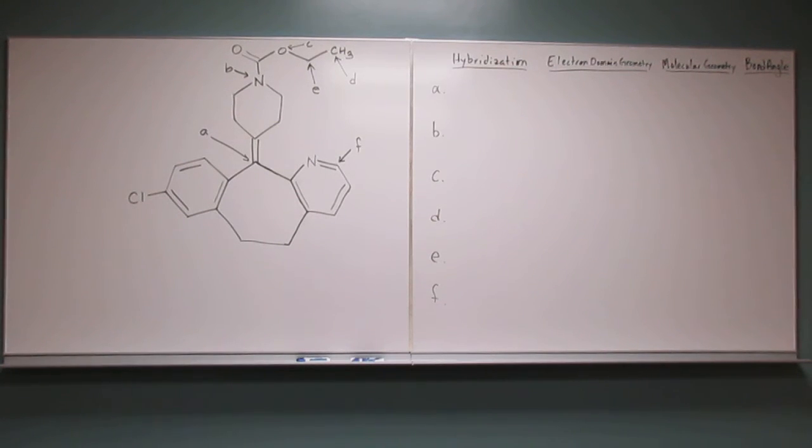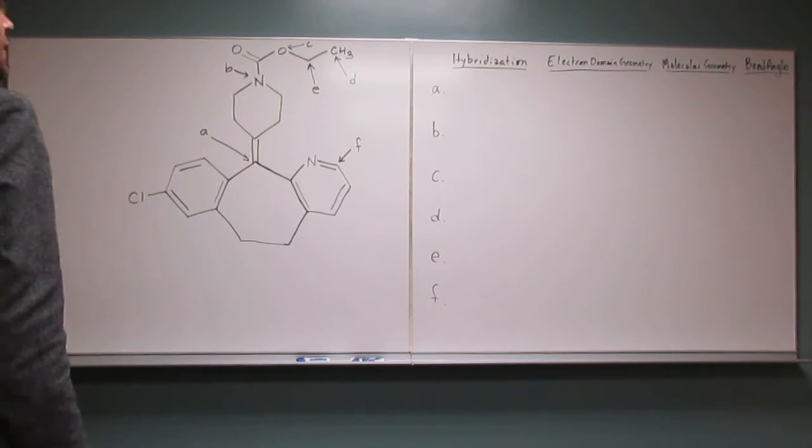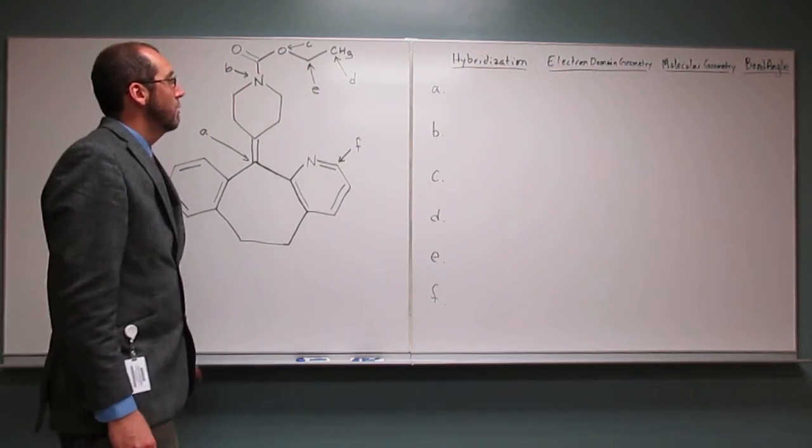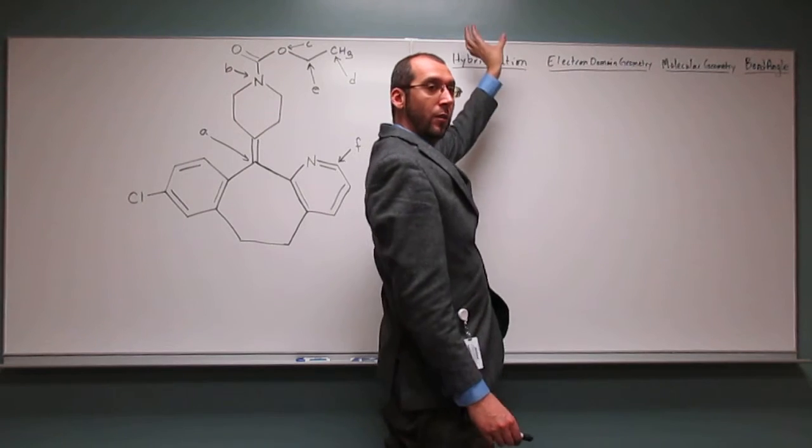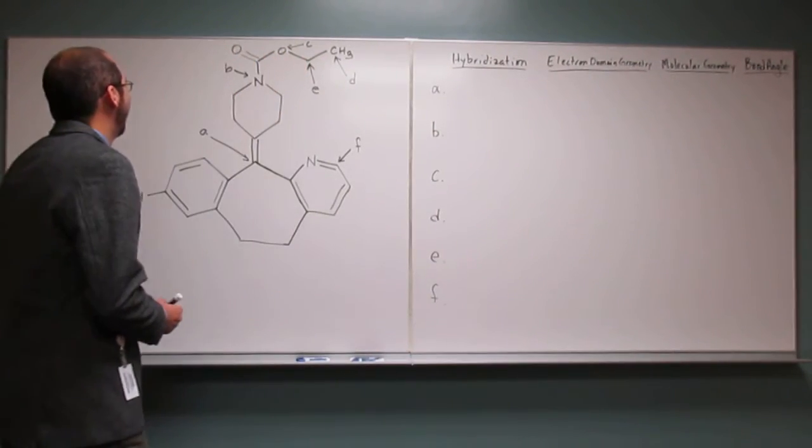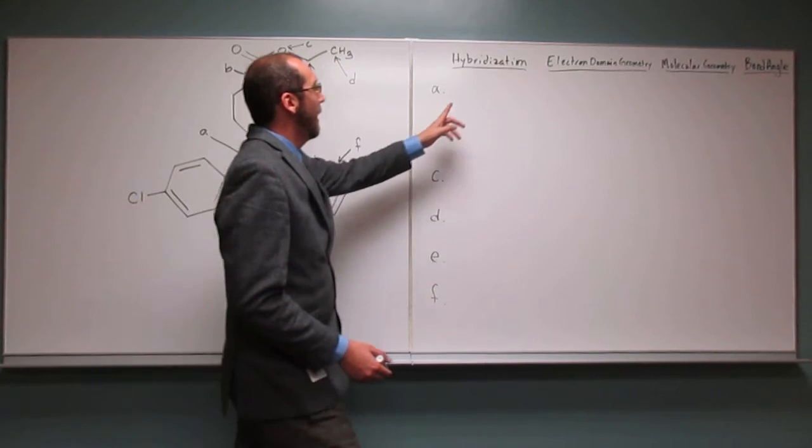Okay, so for the first video of the day, let's do this one. It says loratadine is a drug used to treat allergies and marketed for its non-sedating properties. Determine the following characteristics around the specified atoms in loratadine. And then we have the table over here. So we can do it whichever way you want. Should we go through A first or should we go down the columns first?